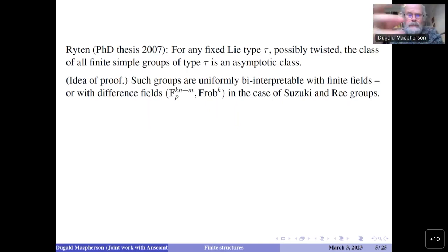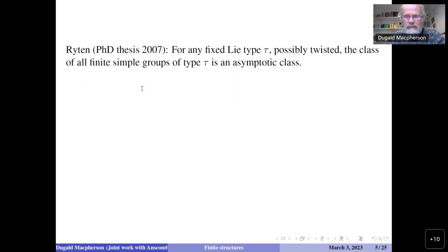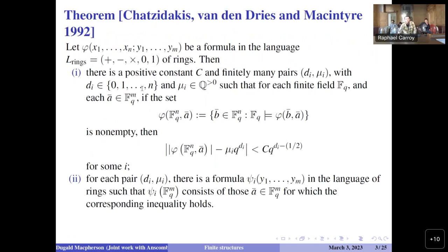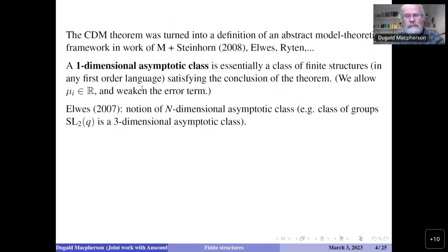A clarifying question arose: asymptotic class means n-dimensional for some n. In the original theorem, di ranges from 0 up to n, the number of variables. In a capital-N dimensional asymptotic class, di would range from 0 up to n times N. So 'asymptotic class' for us just means n-dimensional for some n.